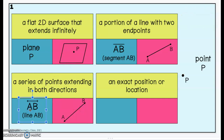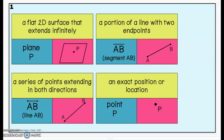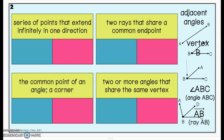Points — that was one that pretty much everybody got right on the vocabulary assessment. A point is an exact position or a location. We label a point with a capital print letter. Same thing here — we're going to match the definitions and then the diagram or the notation with the vocabulary words.